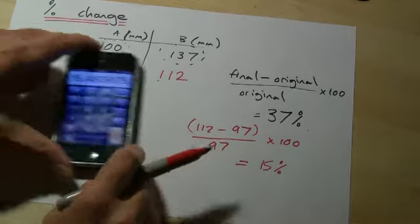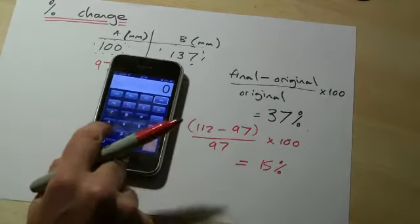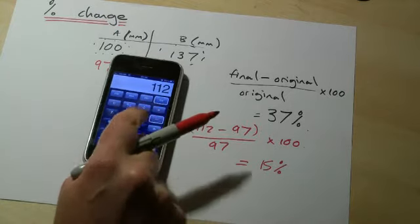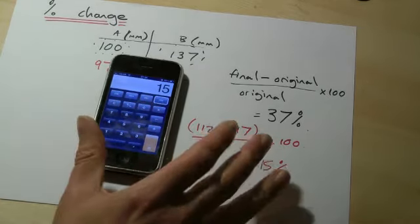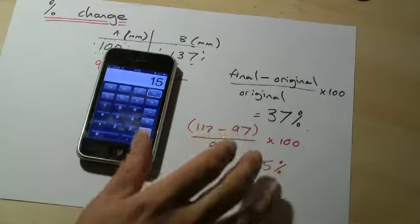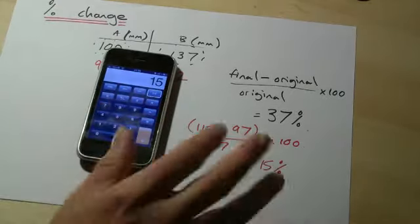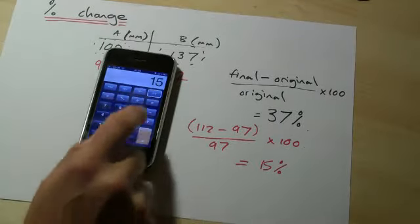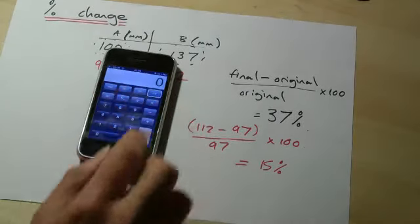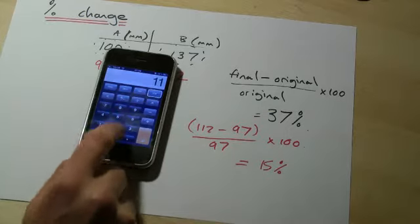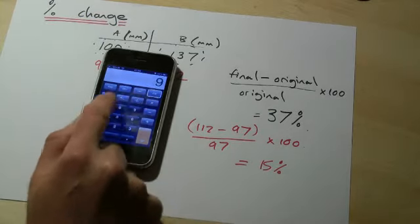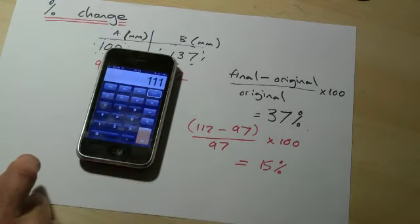Now if you noticed as well, when I did this, I went through every step. So 112 minus 97, and I always press equals, I think that's good practice. If you're confident with the maths and you know the order of your operations, it's not so important. But sometimes you'll be doing some maths and people just kind of rush through the operations. So for example, if I did this, 112 minus 97, divided by 97, equals 111.